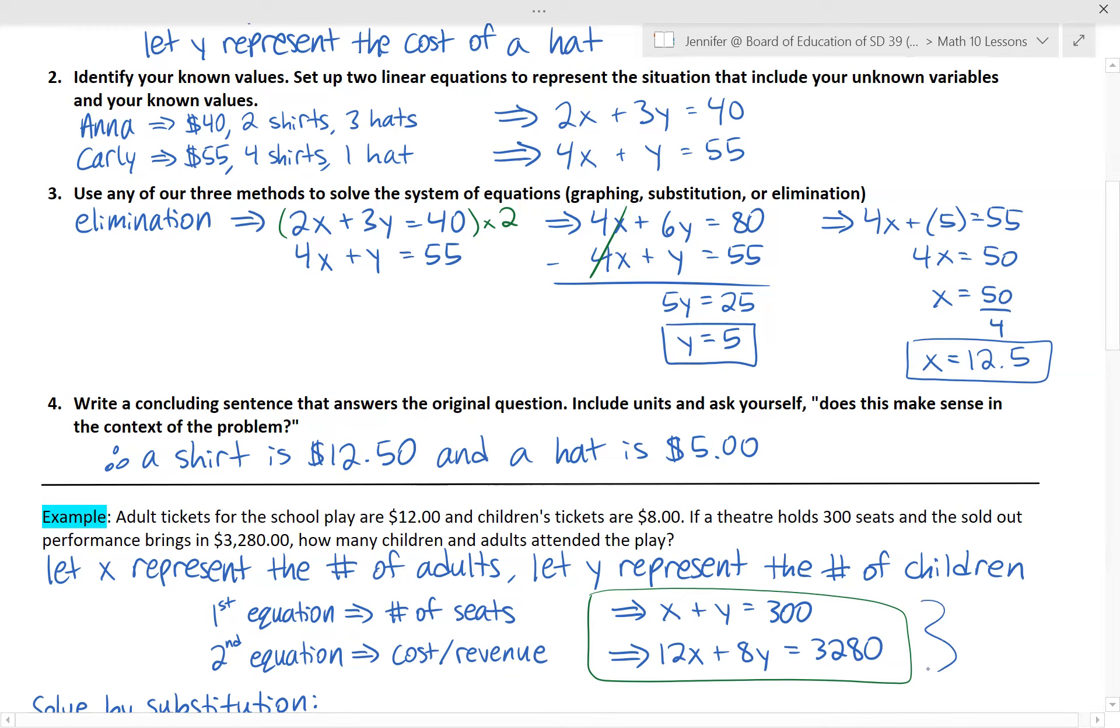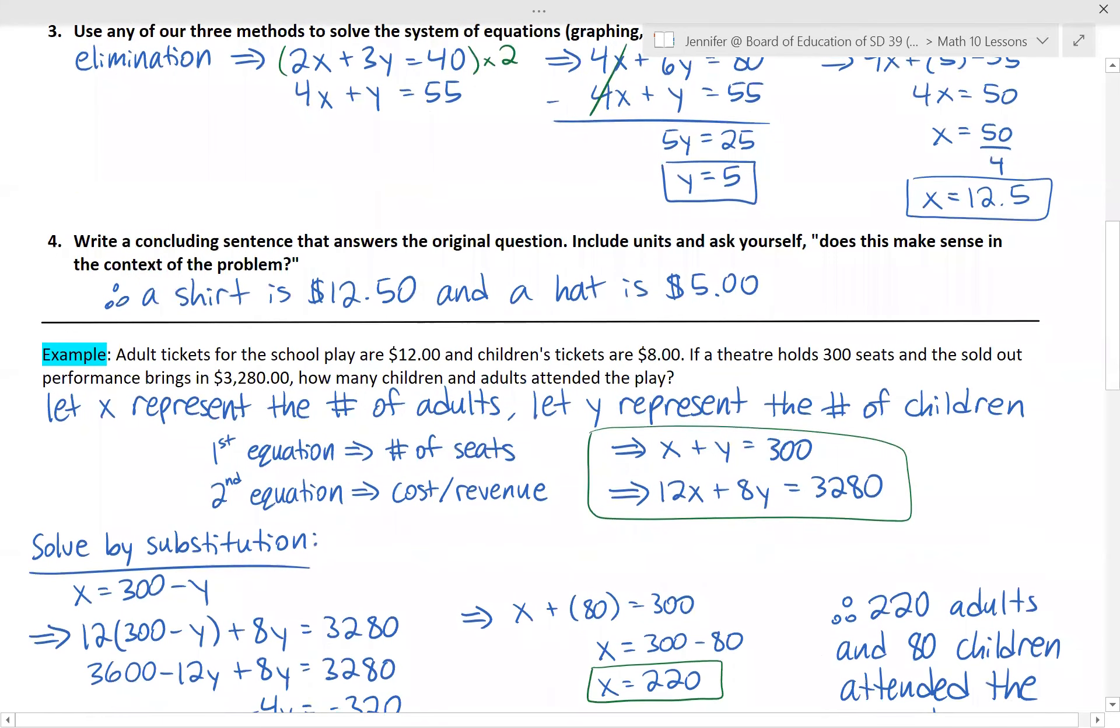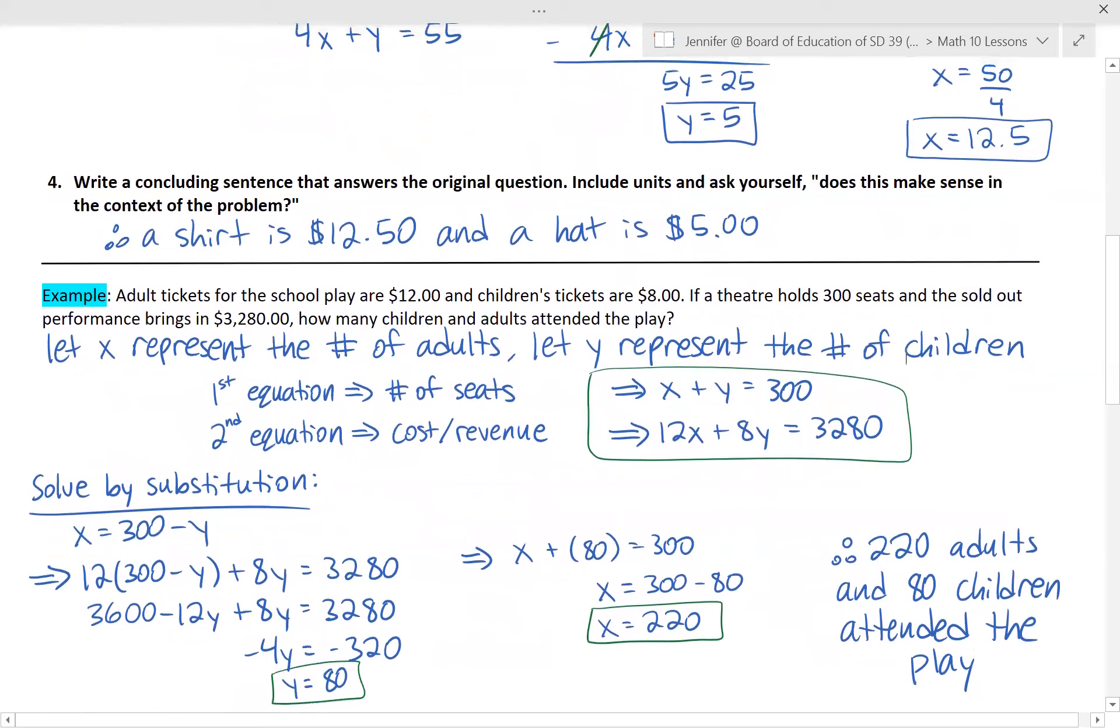At this point we're pretty comfortable with doing the math to actually solve them, but setting them up is what can be difficult. Now that we have them set up, I decided to solve by substitution because it was pretty easy to isolate for X in the first equation. So I took that, I said X is equal to 300 minus Y, and I substituted that into the second equation. I distributed the 12 into the brackets, I collected my like terms, I brought 3,600 to the other side, and I isolated for Y. Then I got Y is 80, and I substituted that into either of the original equations, and I got that X is 220.